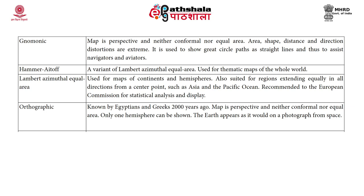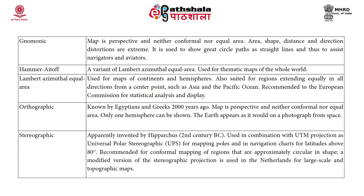Orthographic projection was known by the Egyptians and Greeks 2,000 years ago; it is perspective, neither conformal nor equal area, and can only show one hemisphere. The Earth appears as it would in a photograph from space. Stereographic projection — apparently invented by Hipparchus — is used in combination with UTM as universal polar stereographic for mapping poles and in navigation charts for latitudes above 80 degrees. It is recommended for conformal mapping of regions that are approximately circular in shape; a modified version is used in the Netherlands for large-scale topographic maps.